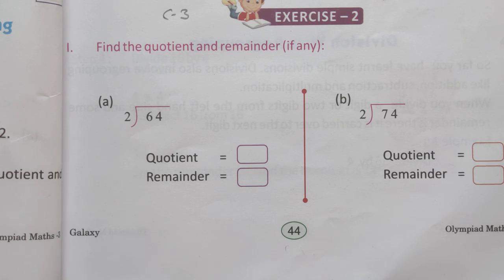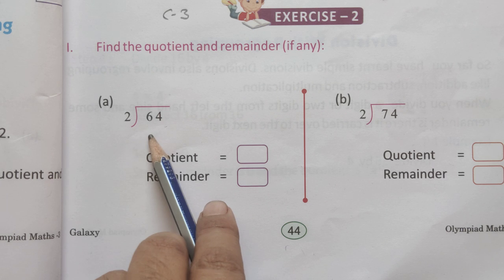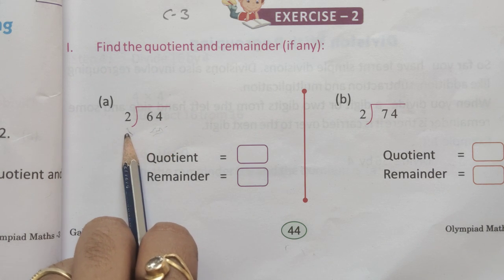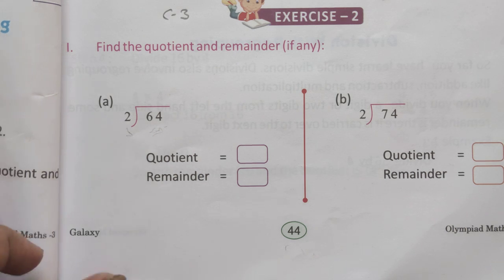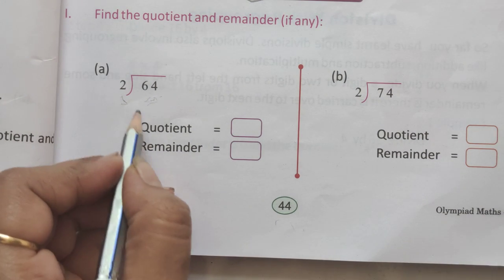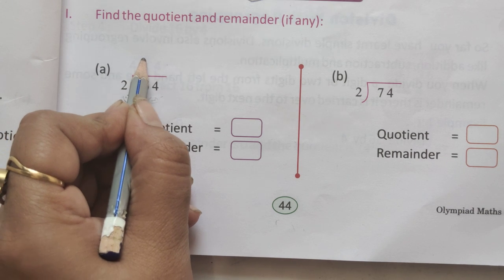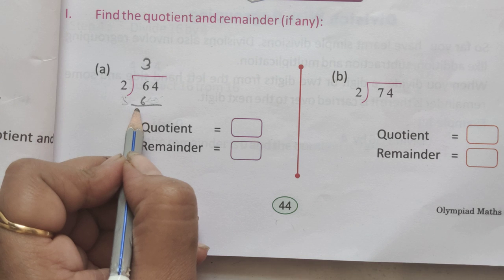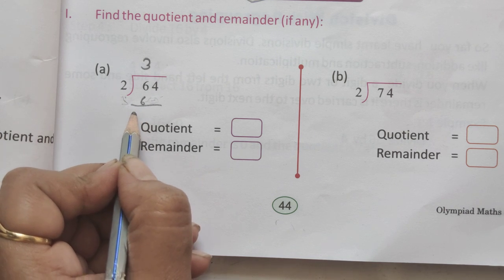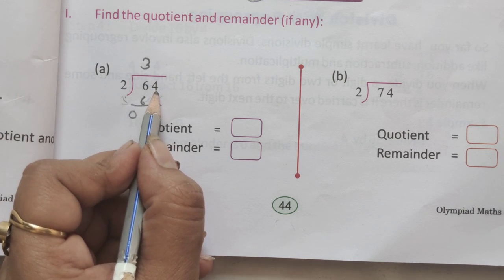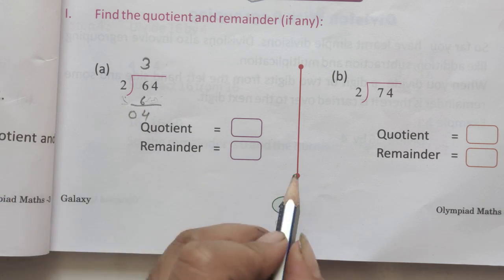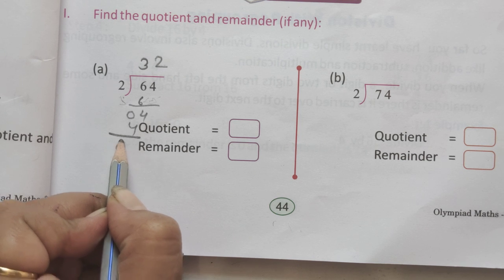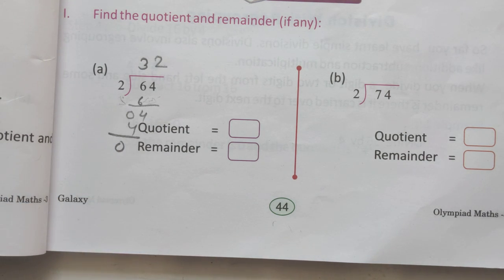The first example: 64 is the dividend and 2 is the divisor. Let's start. 2 threes are 6. Subtract 6, we get 0. Next number is 4. 2 twos are 4. Answer is 0.